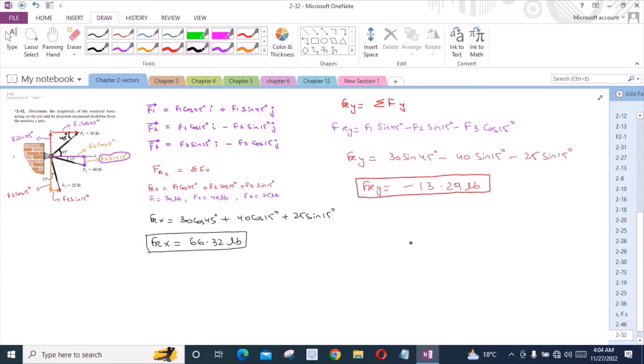Now for the magnitude of the resultant force, we can use the Pythagorean theorem approach. So we have Fr is equal to square root of Fx squared plus Fy squared. So Fr equals square root of 66.32 squared plus negative 13.29 squared. So Fr becomes 67.63 lbs. This is our first answer.